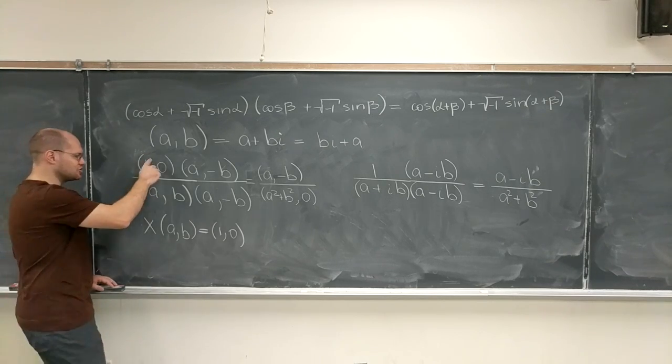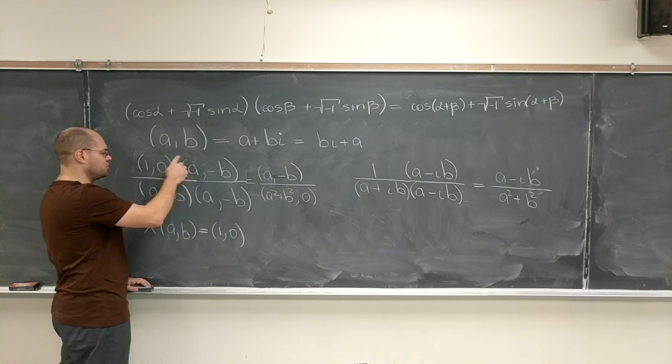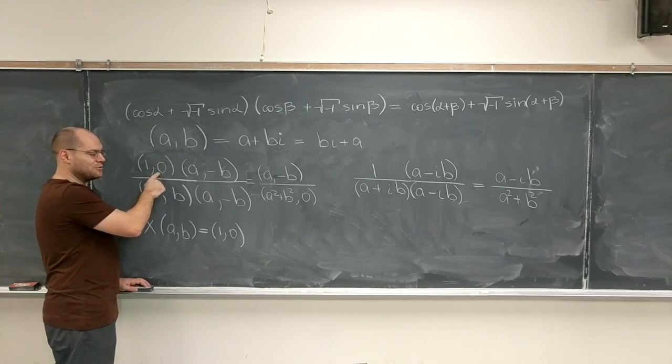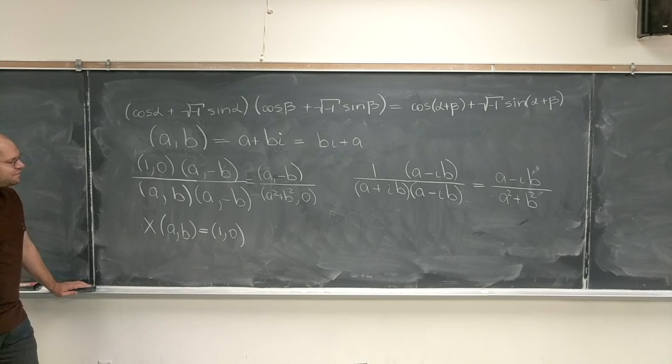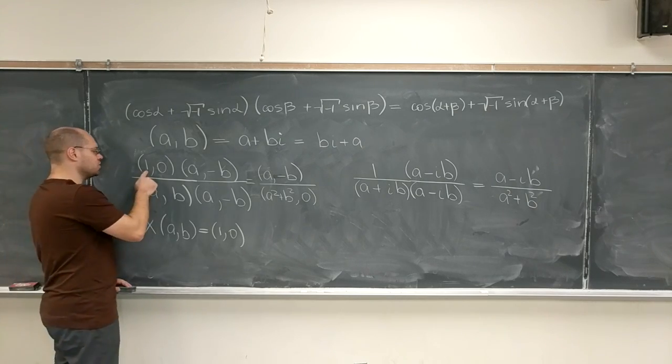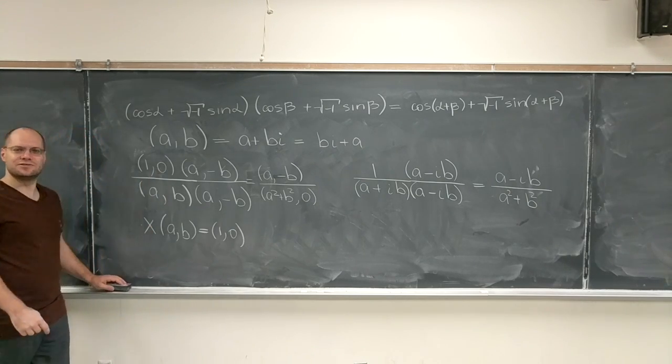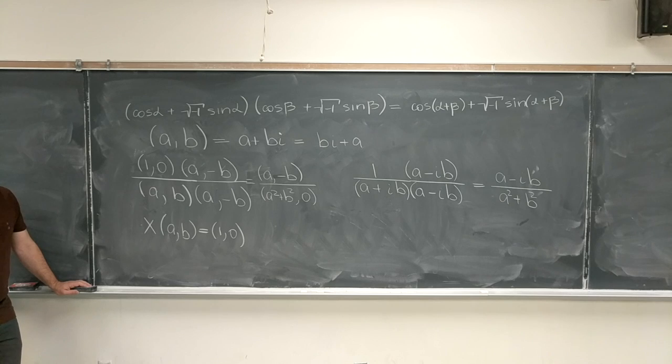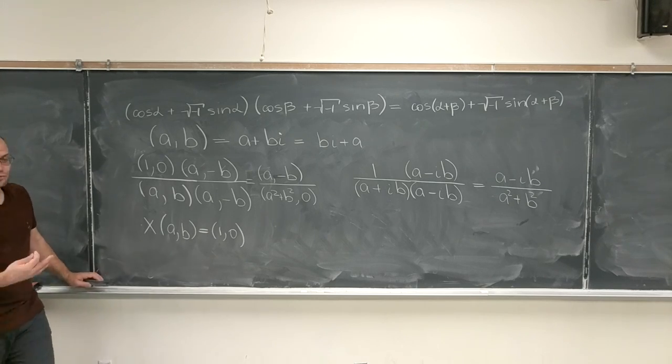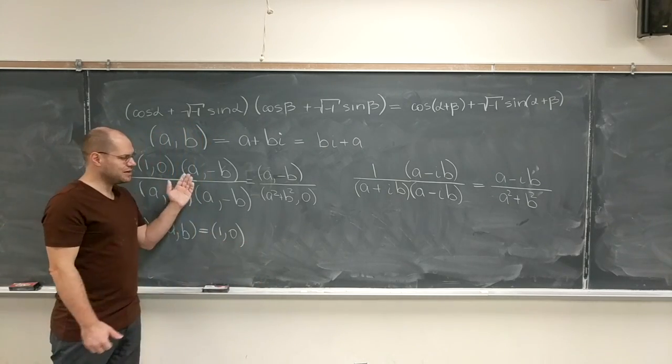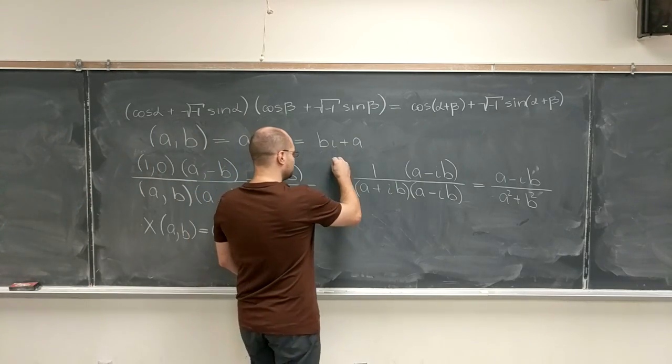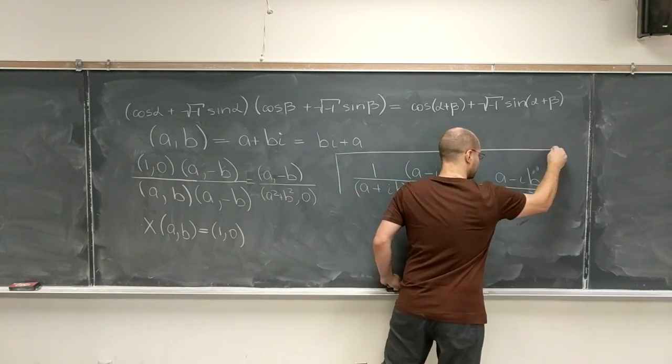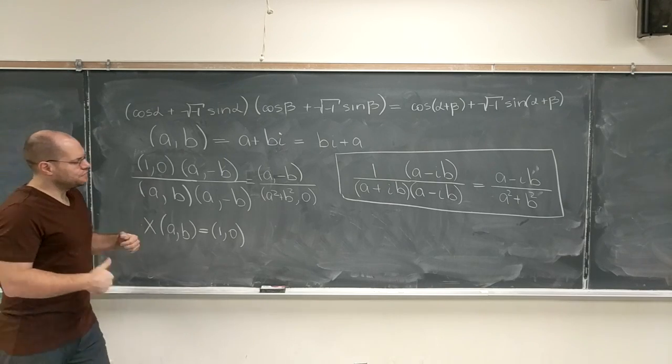So by writing just 1 here—see, here I wrote it correctly, but when I wrote just 1 here, I was already allowing myself some freedom of shorthand notation. When I wrote 1, I really meant (1, 0). Okay, so the result is both, whatever notation that you use, but of course we're going to use this notation.